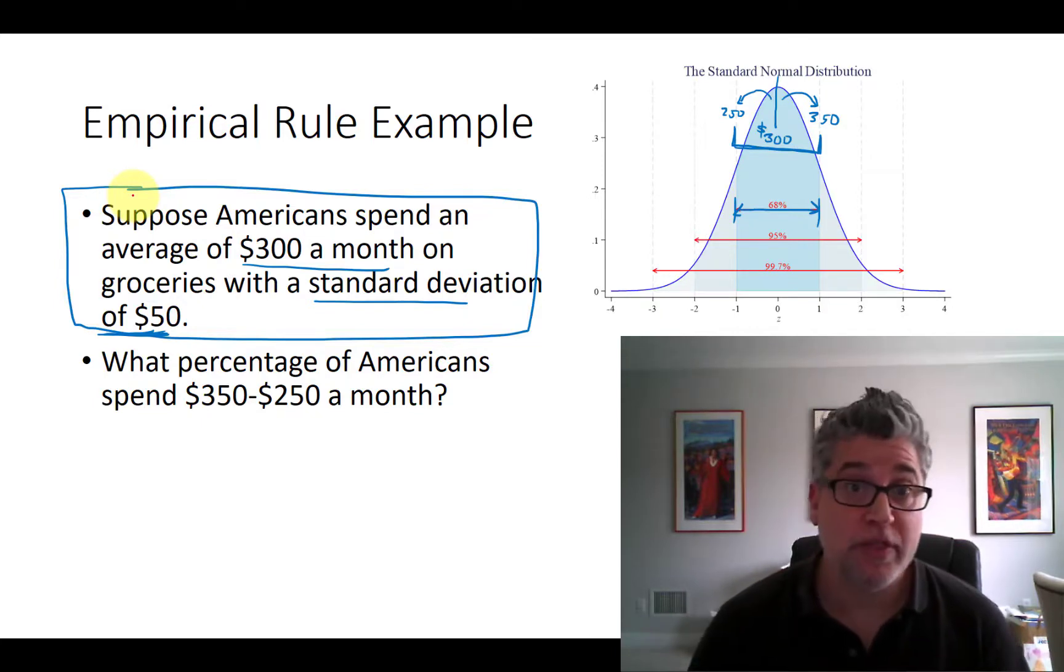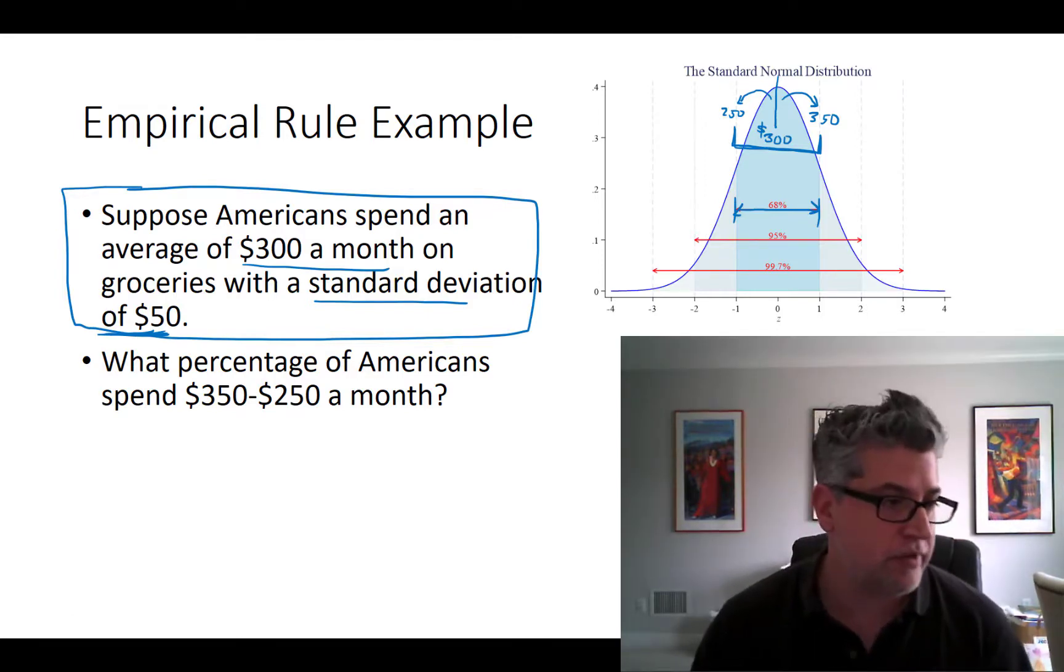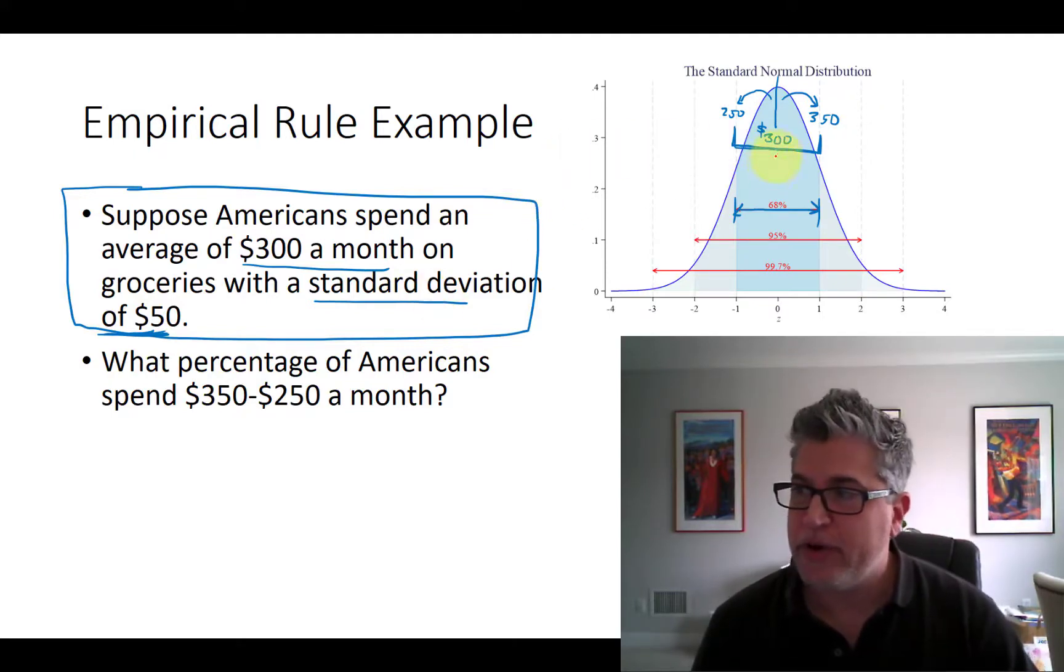But wait, there's more. Because the empirical rule tells us about two standard deviations and three standard deviations. So if we take our $300 again, but this time we add one, two standard deviations, well, that brings us from $300 to $350 to $400.